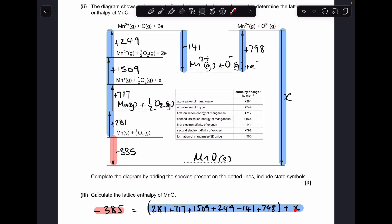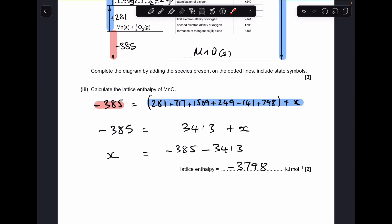And all I need to do is solve for X. So that means the lattice enthalpy comes out at -3798 kilojoules per mole.